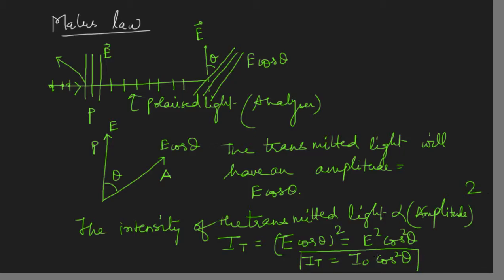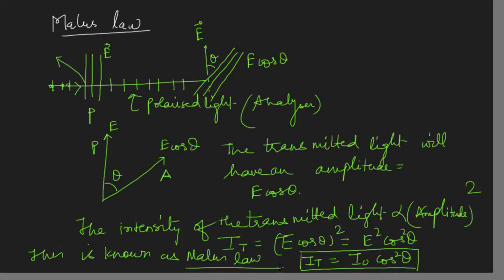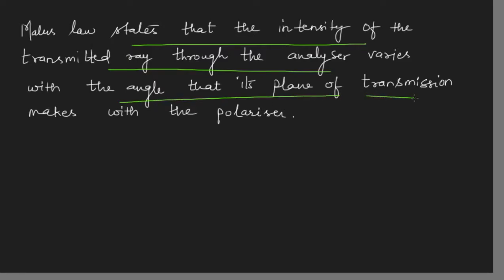This is known as Malus's law, observed by Malus. It states that the transmitted intensity depends upon the angle between the polarizer and analyzer. If theta is 0, the analyzer is parallel to the polarizer and all light passes — maximum intensity. As theta increases to 90°, cos 90° is 0, so intensity is zero — this is when polarizer and analyzer are crossed, perpendicular to each other. When theta becomes 180°, maximum intensity is obtained again.